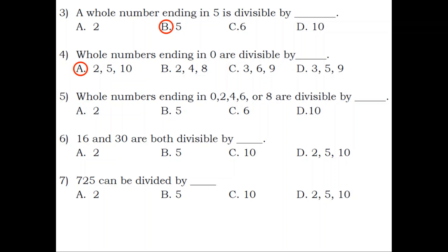Number 5. Whole numbers ending in 0, 2, 4, 6, or 8 are divisible by blank. A. 2. B. 5. C. 6. D. 10. Answer: A. 2.